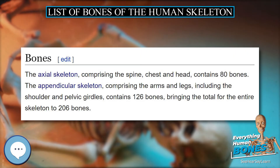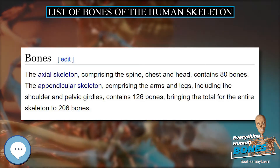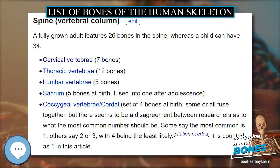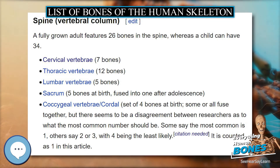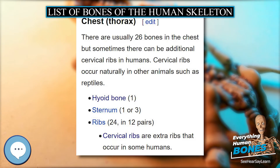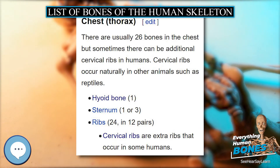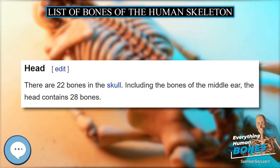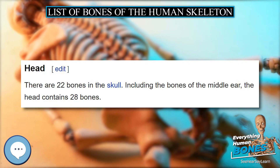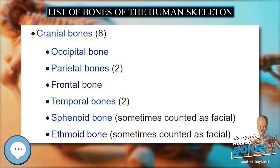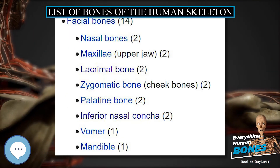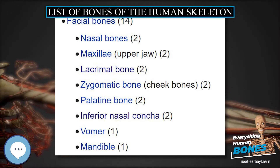Individuals may have more or fewer bones than the average, even accounting for developmental stage, owing to anatomical variations. The most common variations include sutural, or wormian, bones, which are located along the sutural lines on the back of the skull, and sesamoid bones which develop within some tendons, mainly in the hands and feet. Some individuals may also have additional, i.e., supernumerary, cervical ribs or lumbar vertebrae.